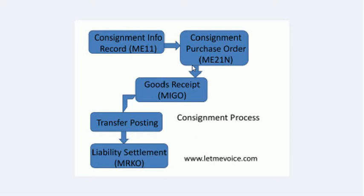There can be two different scenarios in the consignment process. First, after goods receipt — that is, after GRN — we can do a stock transfer from plant to store consignment stock and cancel it directly. Second, we can do a transfer posting to our own stock, so it appears as unrestricted stock in our books and later we can sell it.